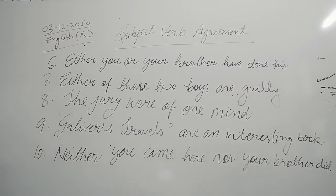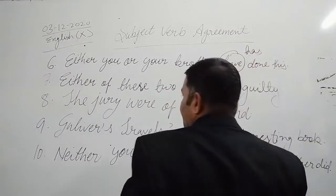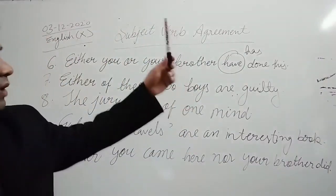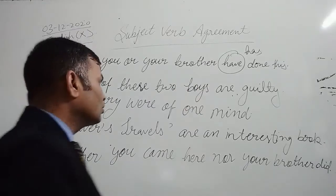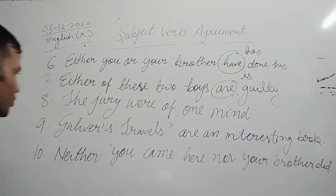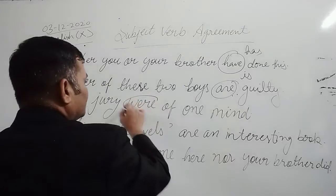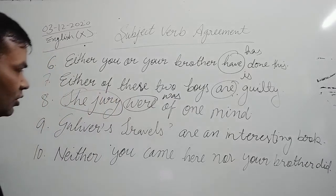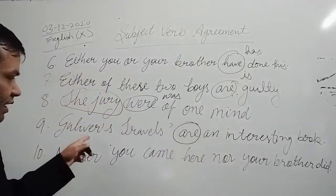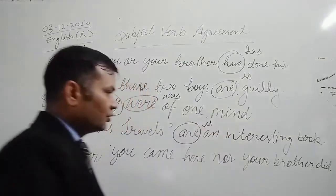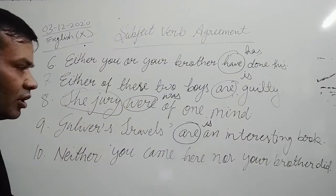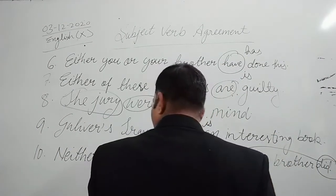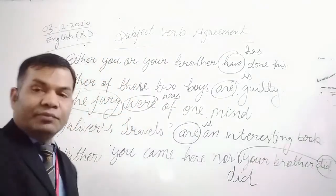Either you or your brother has done it — because if two subjects are joined by 'either...or' or 'neither...nor,' they take a singular verb. Either of these two boys is guilty — same rule applies. The jury was of one mind — because it is represented as a collection. Gulliver's Travels is an interesting book — it is the name of the book, so singular verb is used even though the form is plural. Neither you came nor did your brother — the placement of 'did' should be after 'nor.'